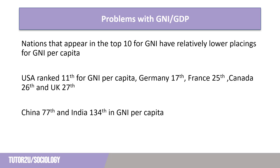For example, the USA, ranked number one for gross national income, only comes in at 11th for GNI per capita, whilst European nations Germany and France also rank in the top 25. Canada and the UK come in at 26th and 27th respectively, followed by nations such as Japan, South Korea and Italy. Most notable is the low positioning of both China and India — ranked 77th and 134th respectively when factoring in population — which hints that perhaps they are not as developed as initially suggested.